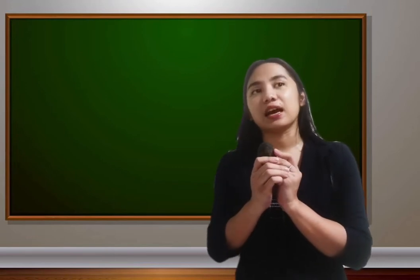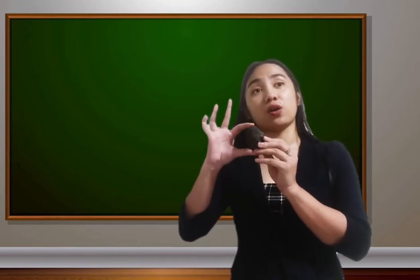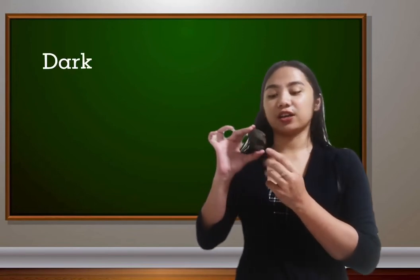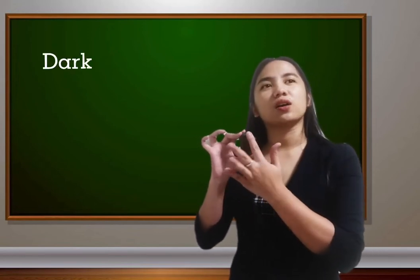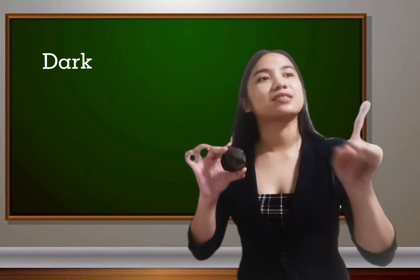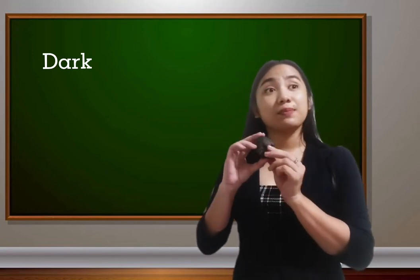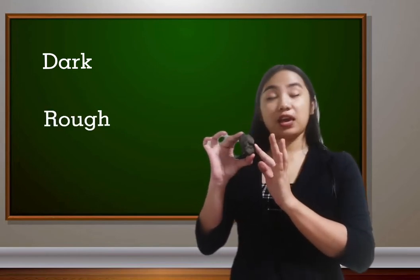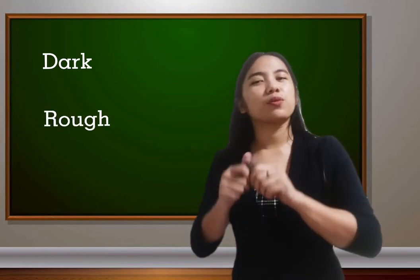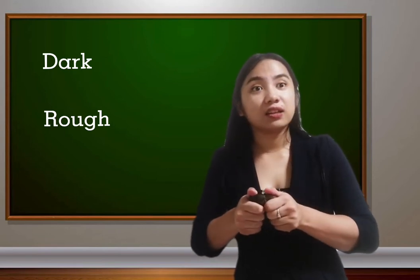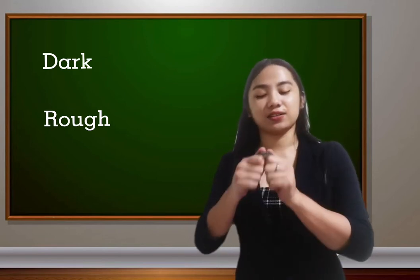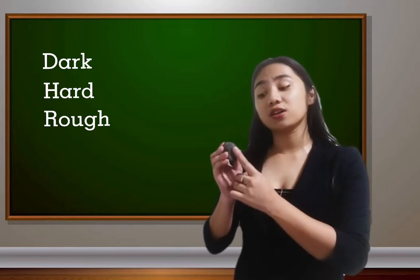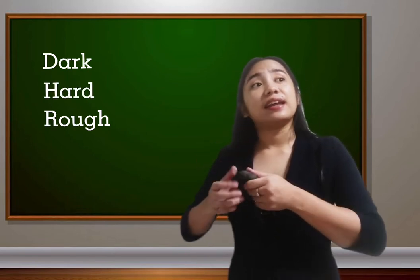Now what can we see about this rock? When we look at this rock, how can you describe it? It has a dark color. Now when we touch this rock, what do we feel? The rock is very rough. And when we press this rock, what do we feel? The rock is hard. So this rock has a dark color, it is rough, and it is very hard.